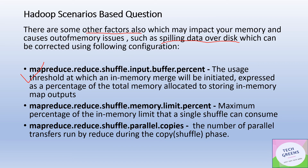The first relevant property is `mapreduce.reduce.shuffle.input.buffer.percentage`. This is a usage threshold — expressed as a percentage of total memory allocated for in-memory map outputs — at which an in-memory merge will be initiated. When that threshold is reached, smaller files are merged into a larger object and transferred across nodes, rather than sending many smaller pieces over the network, reducing traffic and network overhead during shuffling.